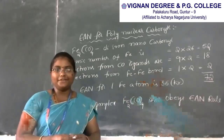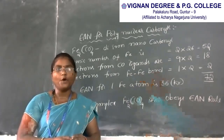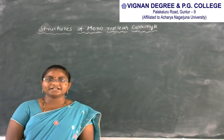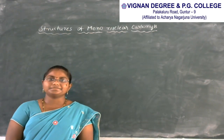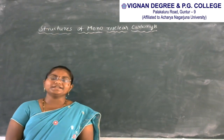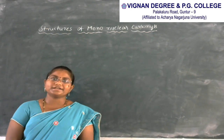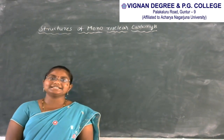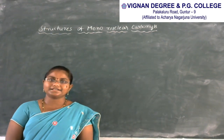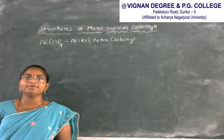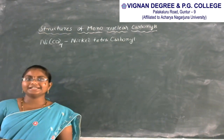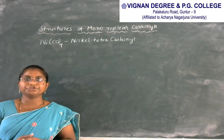This completes the calculation of EAN for mononuclear and polynuclear carbonyls. The next topic is structures of metal carbonyls, classified into mononuclear and polynuclear carbonyls. The first example for mononuclear carbonyls is nickel tetracarbonyl, where 4 CO ligands are attached to only 1 metal atom, nickel.